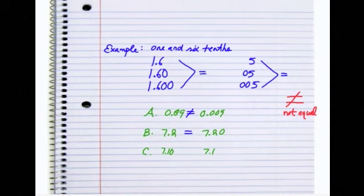Letter C, the same scenario. Seven and one tenth is equal to seven and one tenth. The zeros that follow our decimal don't change at all the value of what the decimals actually were.